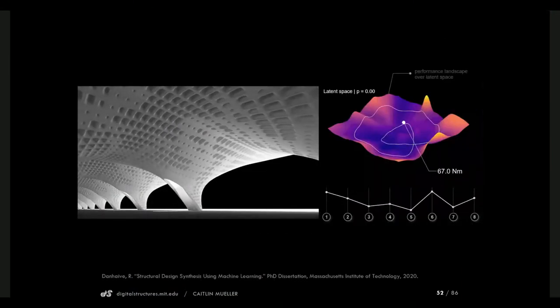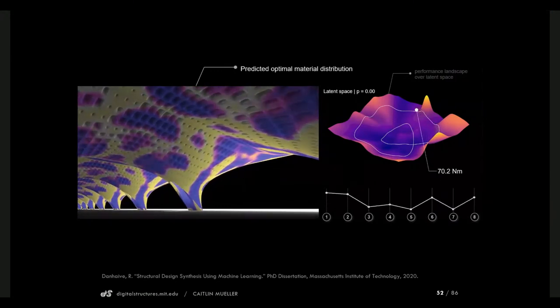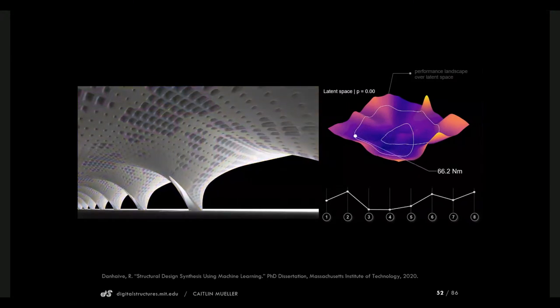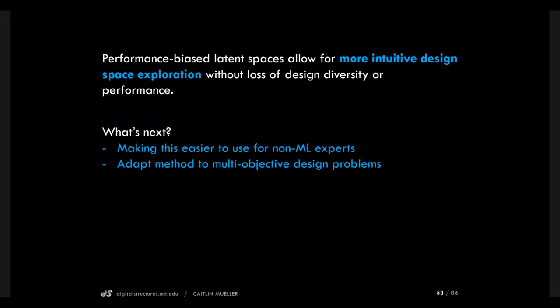We can also apply this idea with surrogate modeling — combining real-time topology optimization results with a two-dimensional latent space that allows us to understand systematically how different designs in the space relate to each other. We're really excited about these performance-based latent spaces, though they're not immediately accessible to a general community. One ongoing challenge is that we mostly work with synthetic data we've generated ourselves, and we need to start working with real-world data — databases of real designs out in the world that these techniques can build on.